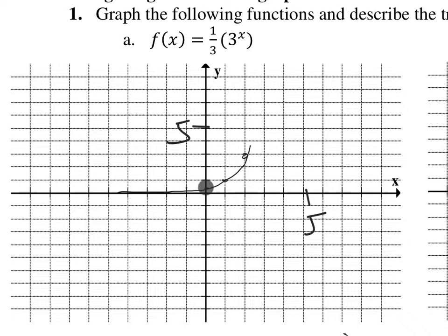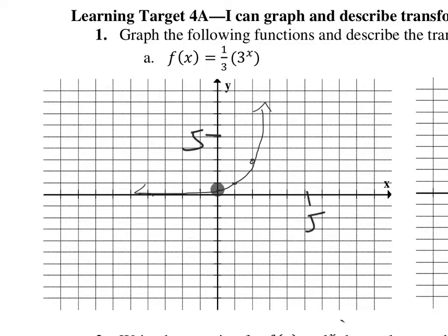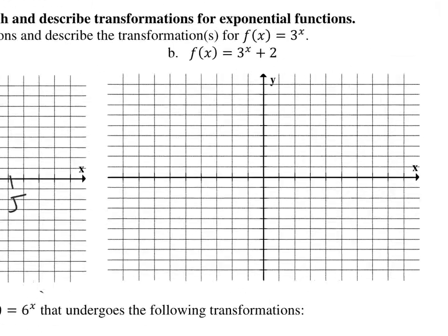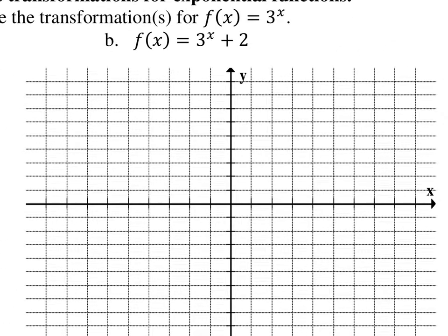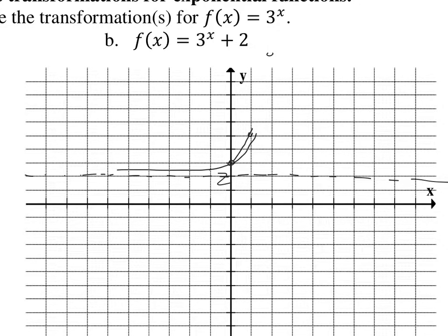It's going to look like this. We're going to have an asymptote of the zero axis, and that is the x-axis. So here we've got three x plus two. This is going to raise our asymptote up two there. So that's two. And then our three to the x axis is going to go through zero, one; one, three; and then two, nine, somewhere up here and off to the left. Make sure you draw that asymptote in there.